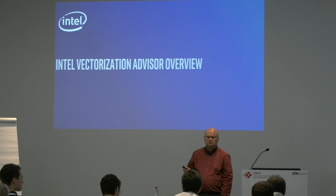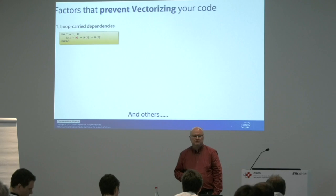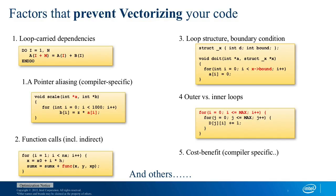Probably the known factors that prevent vectorization of your code: we might have loop carried dependencies, so we have A of i plus m and A of i on left and right side of the equation, which when the vector length is bigger than the offset, means you can have in one vector elements on both sides — that is a dependency. Pointer aliasing: the compiler does not know if it's probably the same array on the right and left side, and after function calls as well.